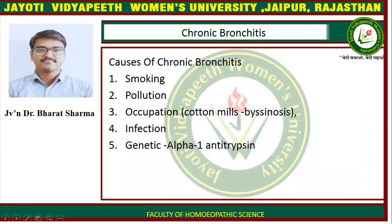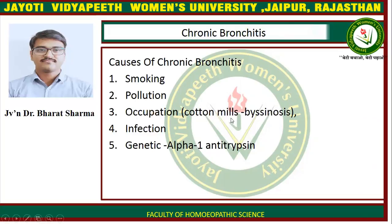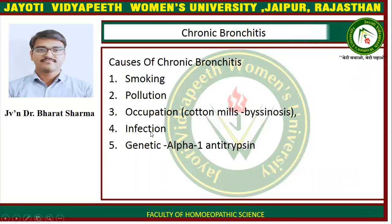The causes of chronic bronchitis are: first, smoking; second, pollution; third, occupation — such as cotton mills causing byssinosis; fourth, infection; and fifth, genetic — alpha-1 antitrypsin deficiency.